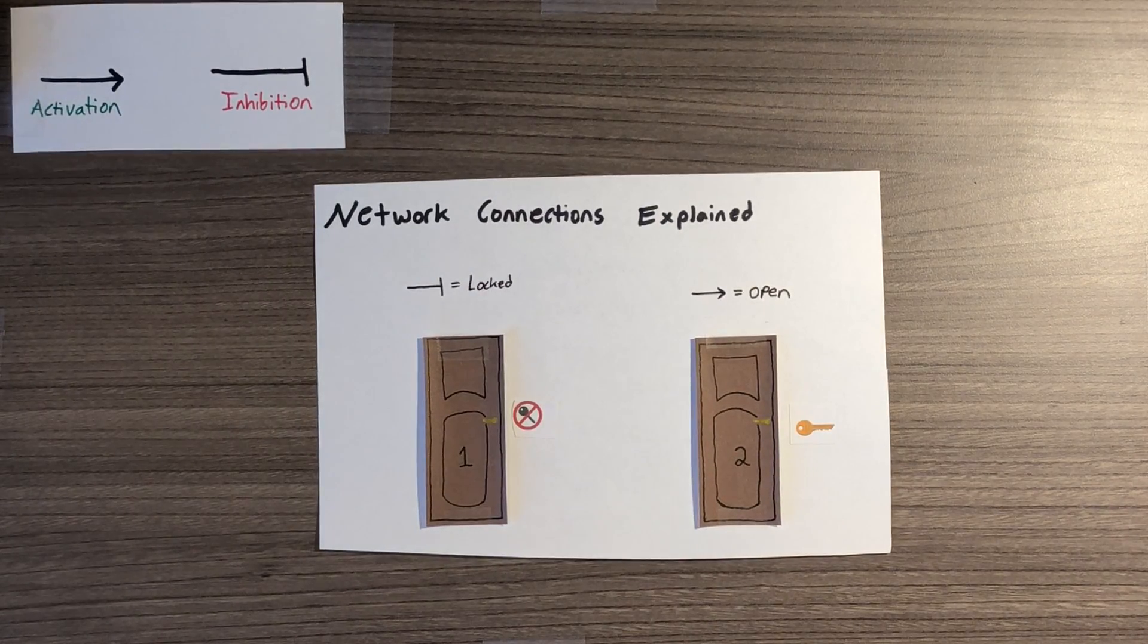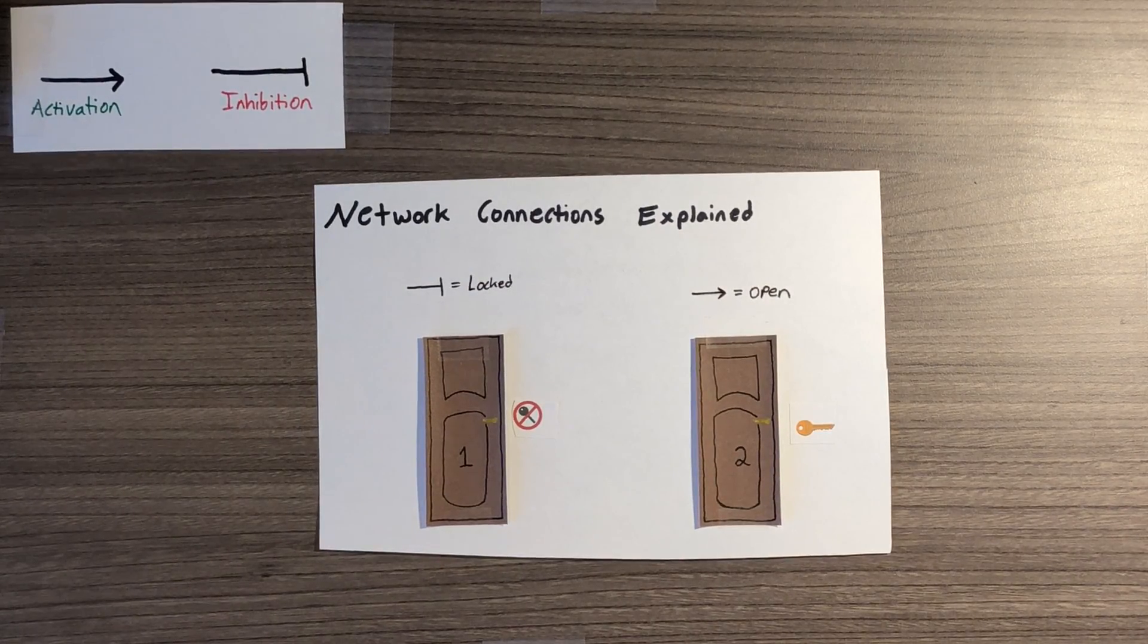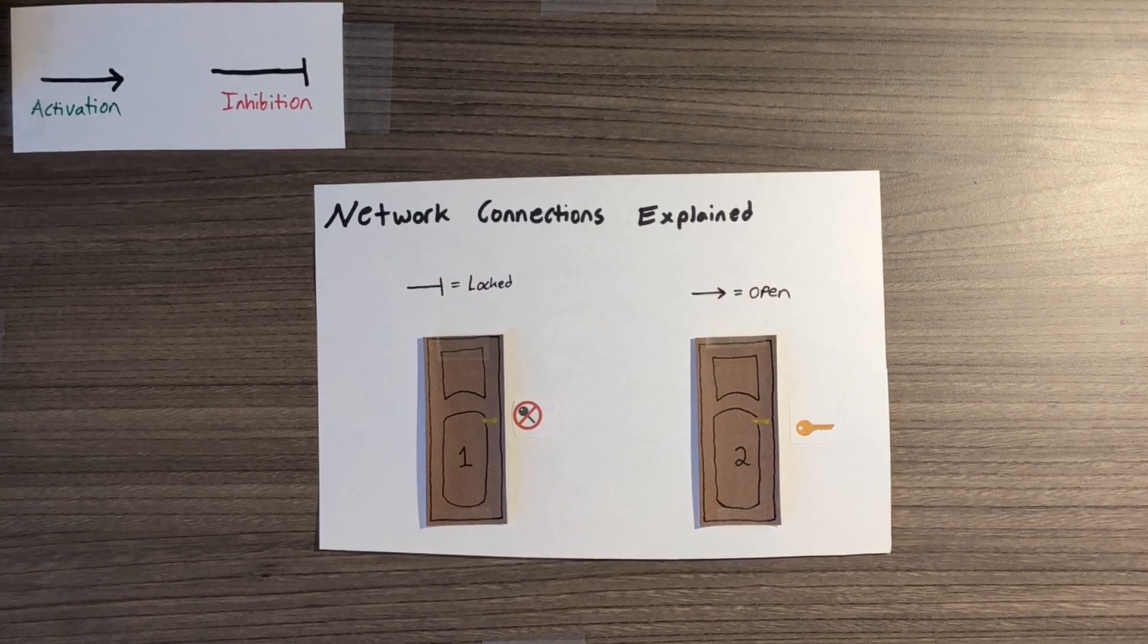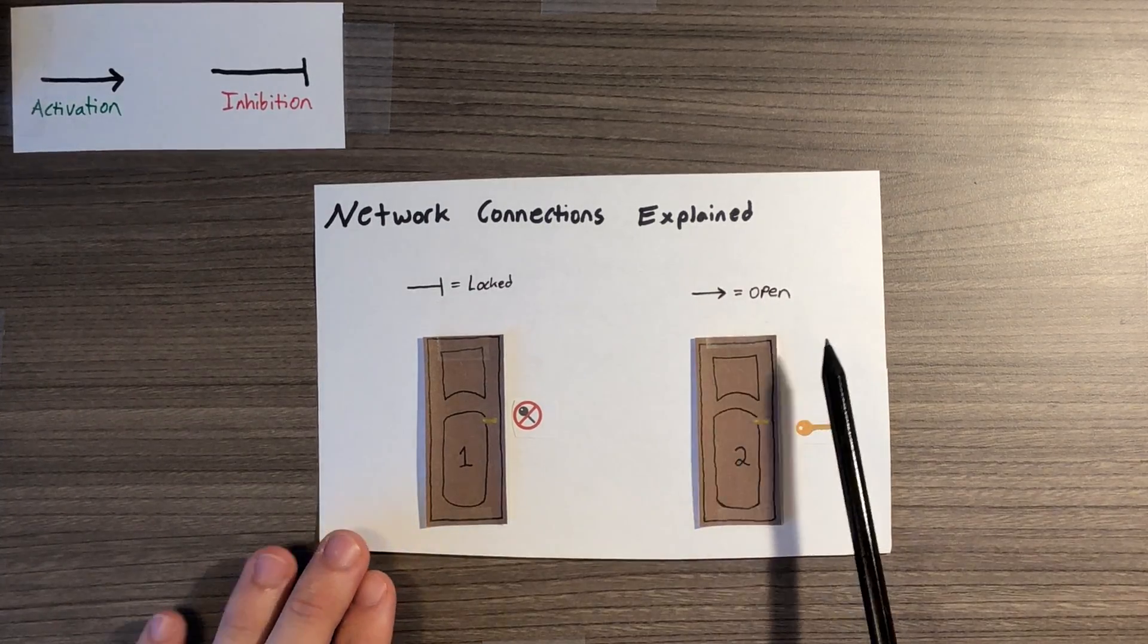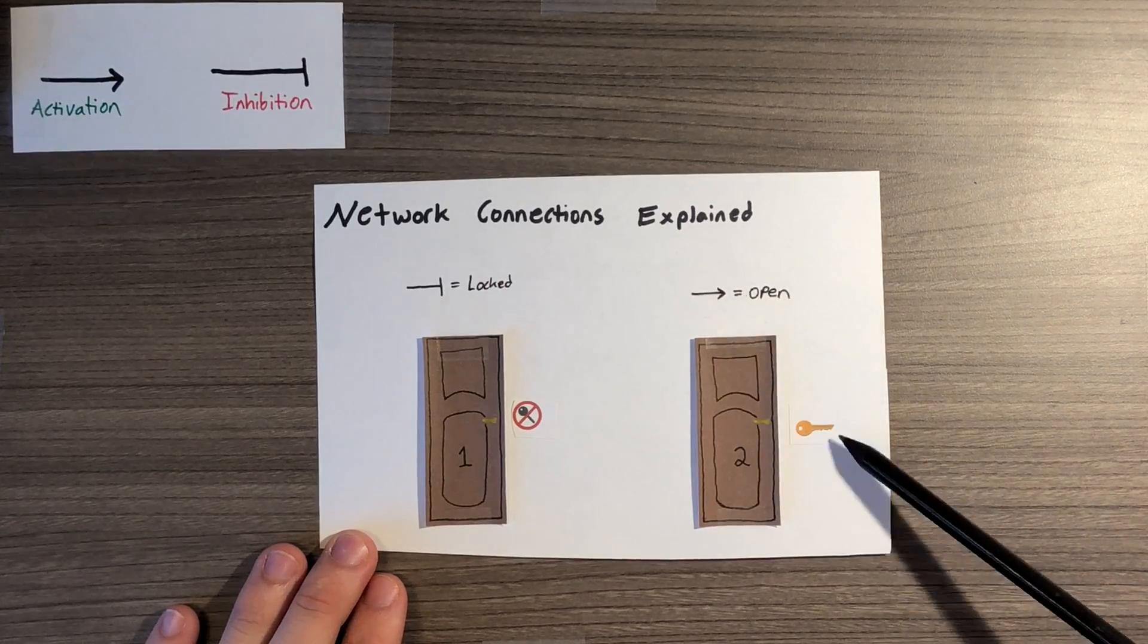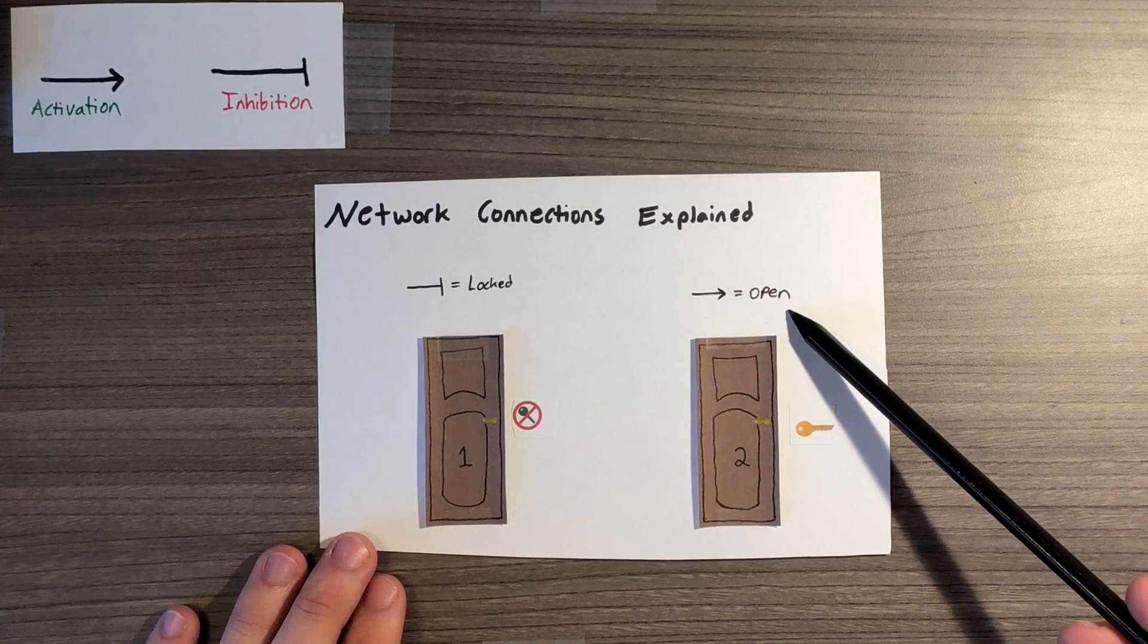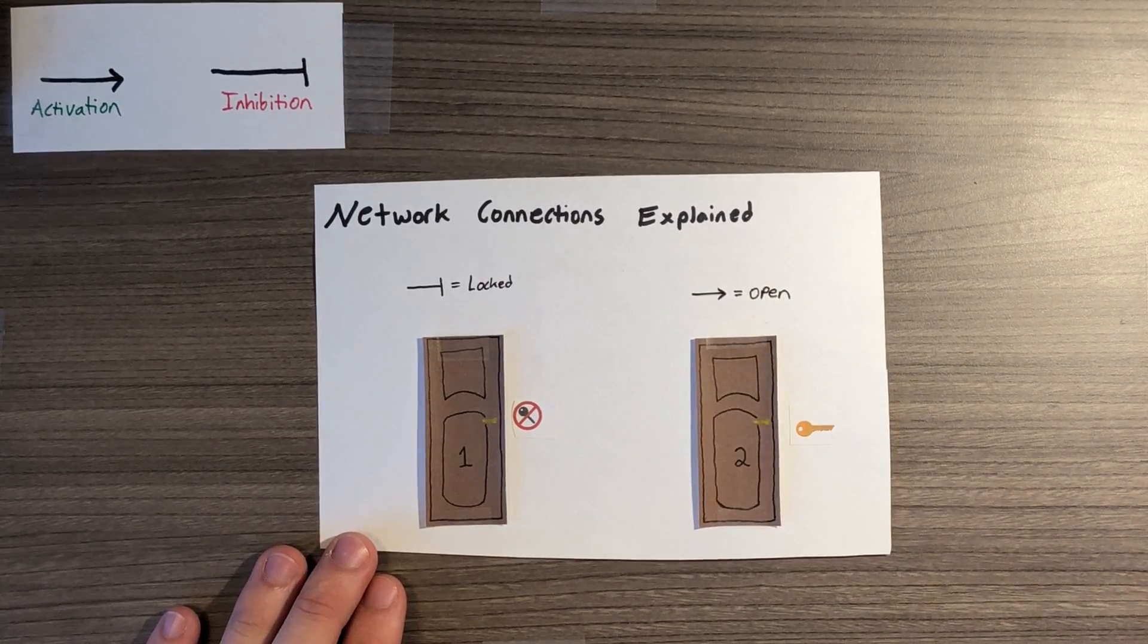I will start by explaining the connections on the networks, which I will explain by relating them to the locked and unlocked door method, similar to how I did in the second mini video where I explained single recessive epistasis. The best way to understand the connections is to look at the arrows as keys, which means you have an open door allowing a gene to go through and be transcribed.